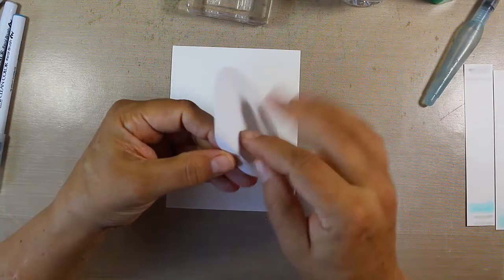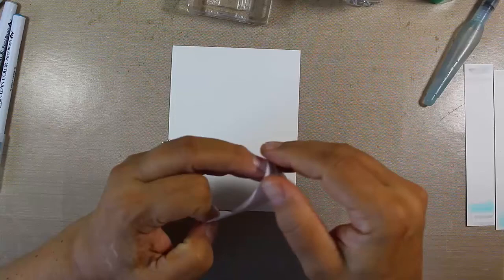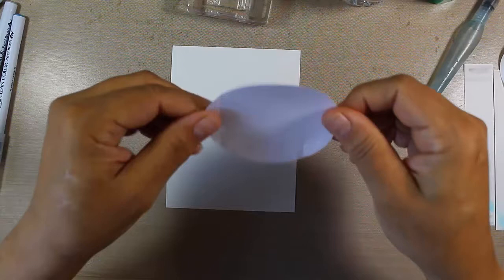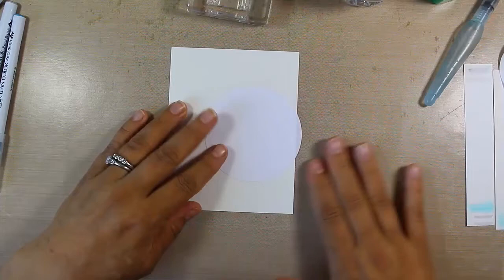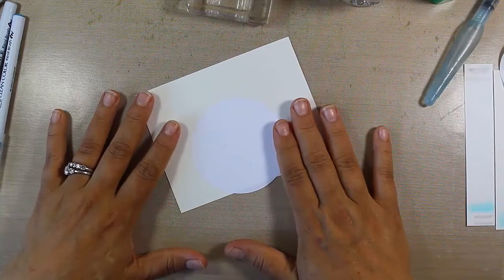I've gone ahead and cut this out of some label paper. You can use post-it paper or anything really. Inkadinkado has some masking paper as well that you can use. I'm just going to mask off my circle, just slightly offset.